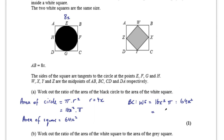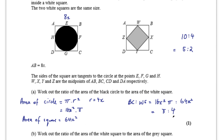Now let's write those in a ratio: the black circle to the white square is 16x²π to 64x². We simplify by dividing through by x² and then by 16, giving us π to 4. So my final answer for the ratio of the black circle to the white square is π to 4. That's possibly worth at least two or three marks — working out the area of the circle, the area of the square, and then the ratio.